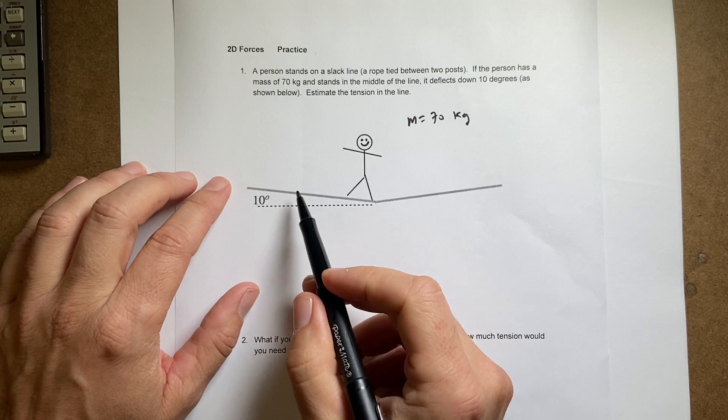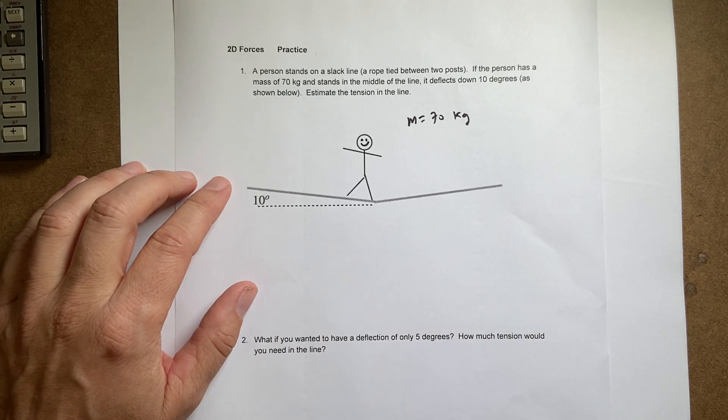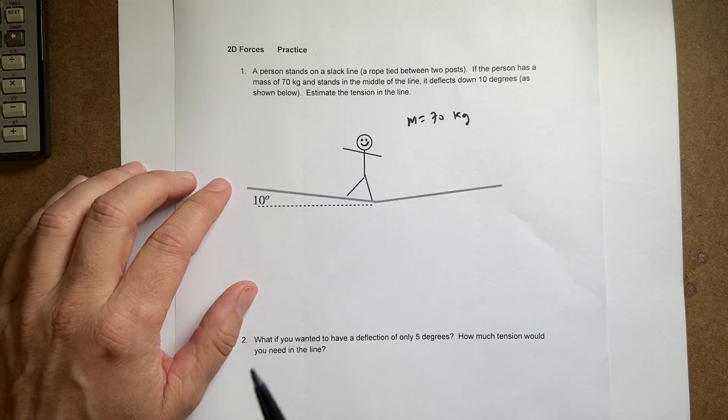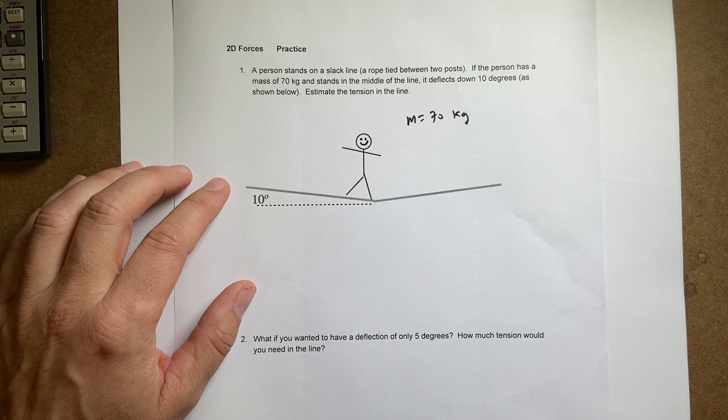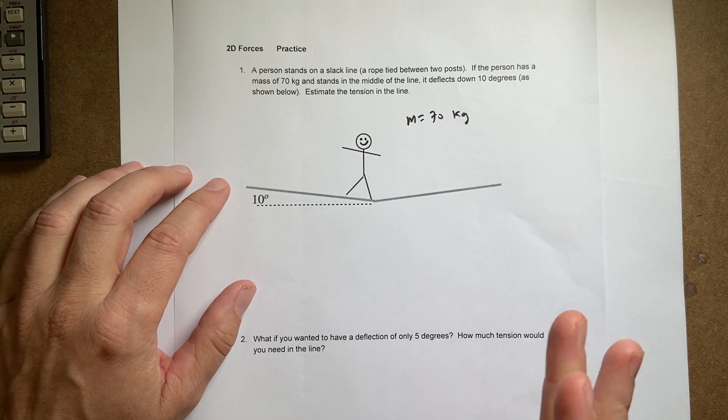Middle of the line and it deflects 10 degrees below. It has to deflect when you stand on it. So the question is what's the tension in each line? In the line, it's the same line.